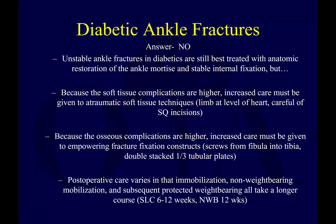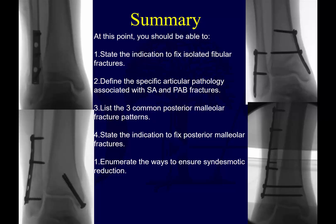How do you change the indications and goals of treatment? You really don't change the indications that much — unstable ankle fractures are still best treated with anatomic restoration of the ankle mortise and stable fixation. But because soft tissue complications are higher, increased care is given to atraumatic soft tissue techniques, elevation, and careful incisions. Bone complications are higher, so you'll often use more locked fixation, double-stack one-third tubular plates, or fixing from the fibula into the tibia, and multiple syndesmotic screws to improve stability. Post-operative care requires more caution — healing takes twice as long, so patients are often non-weight-bearing longer and immobilized longer.